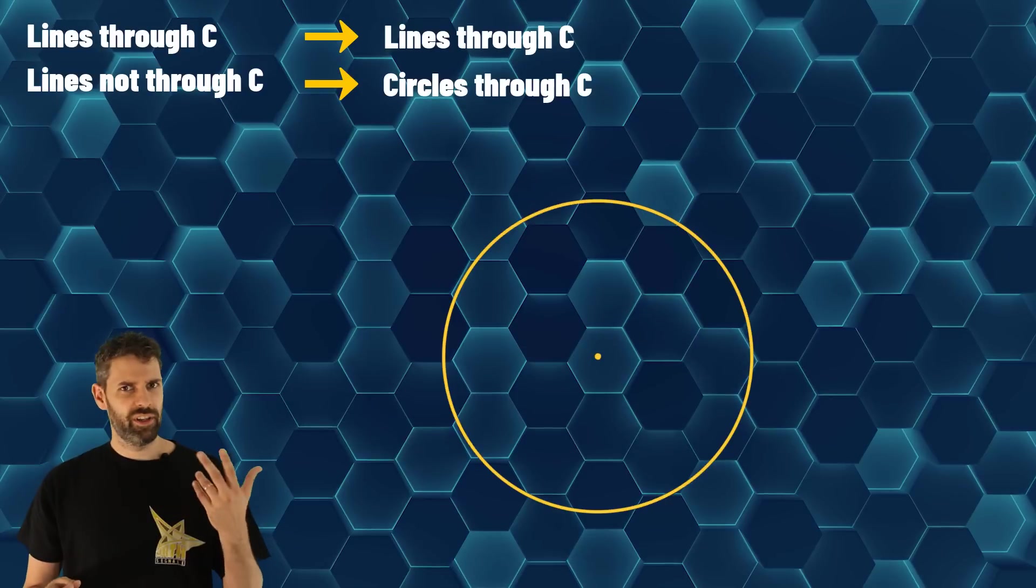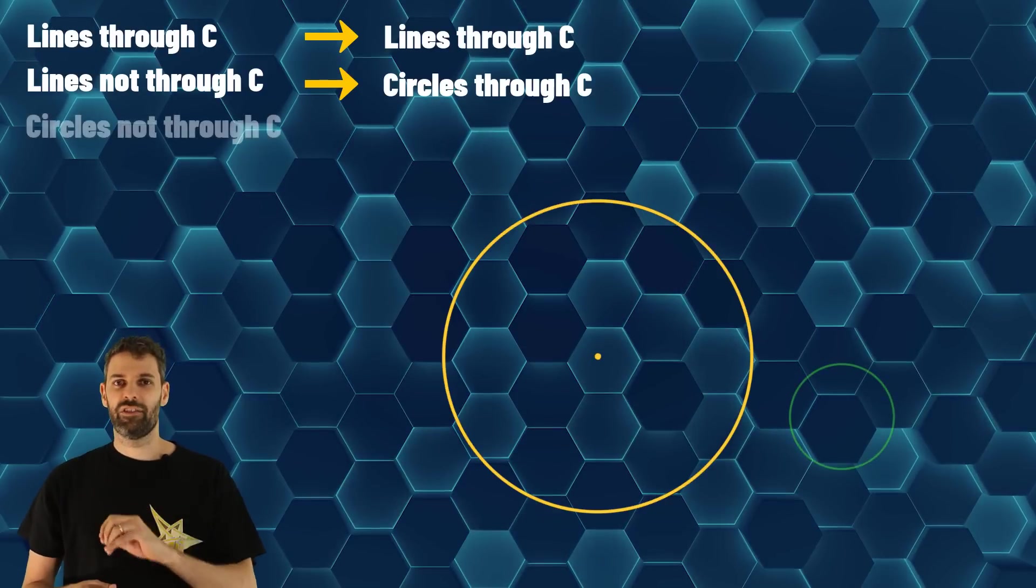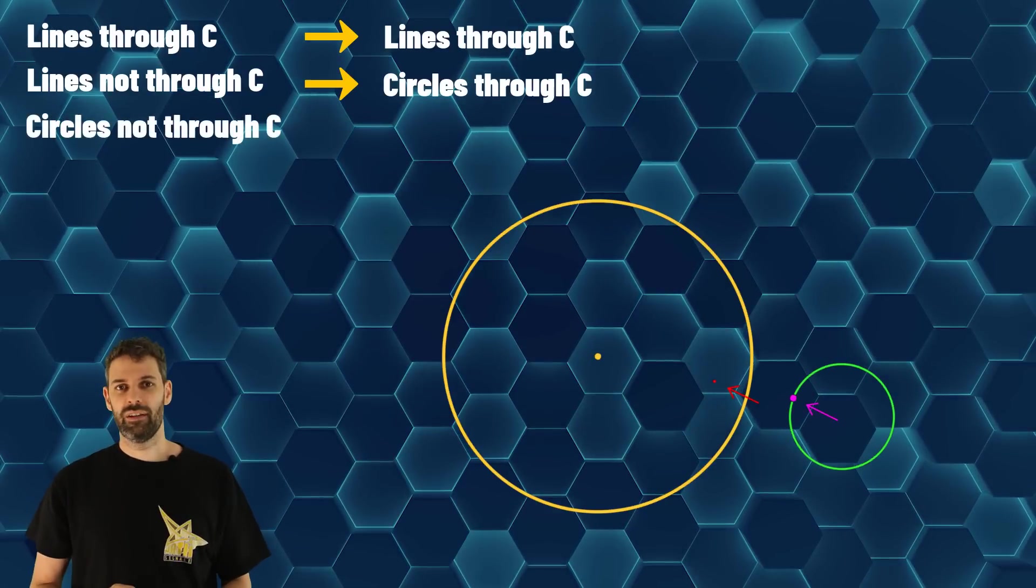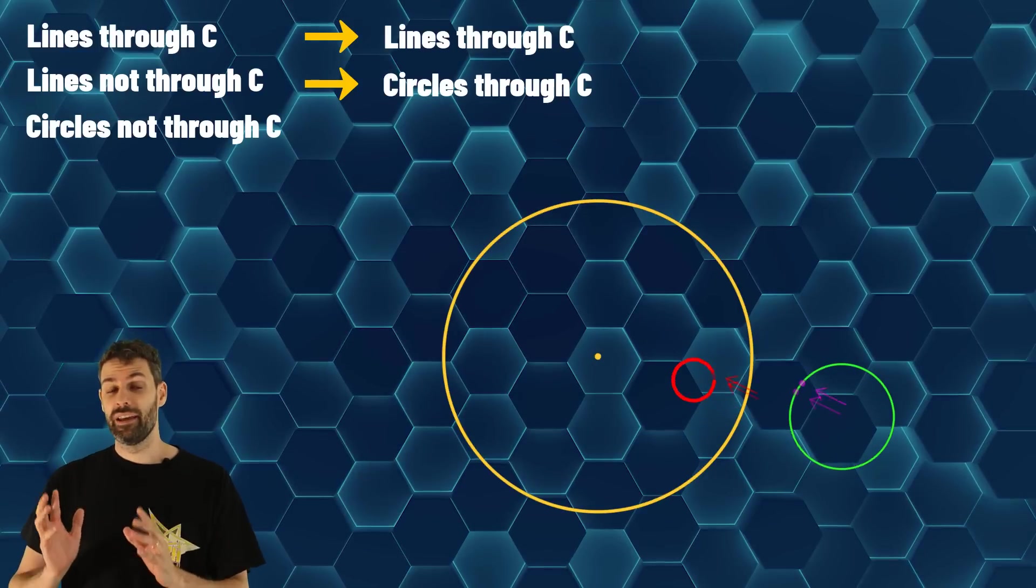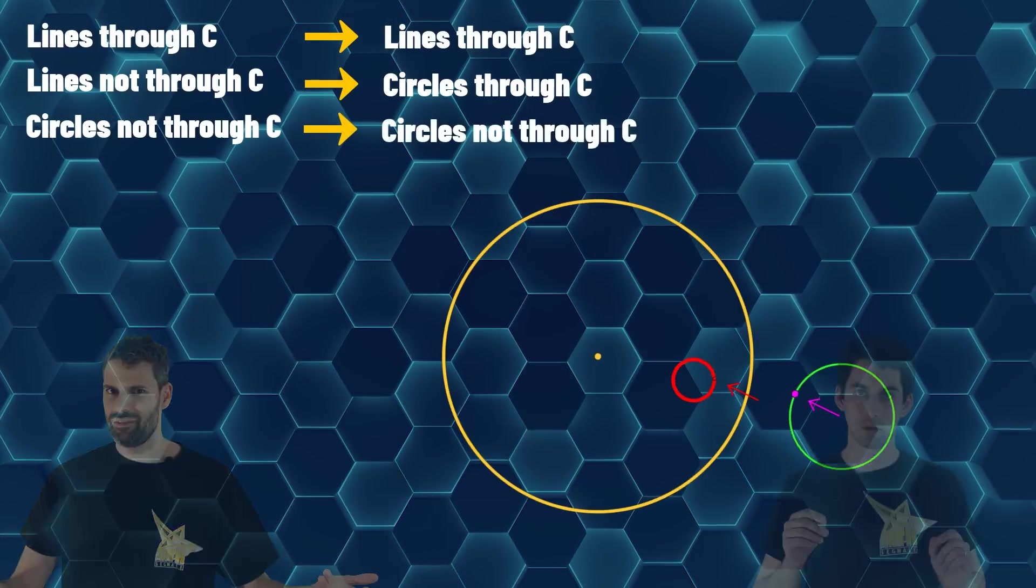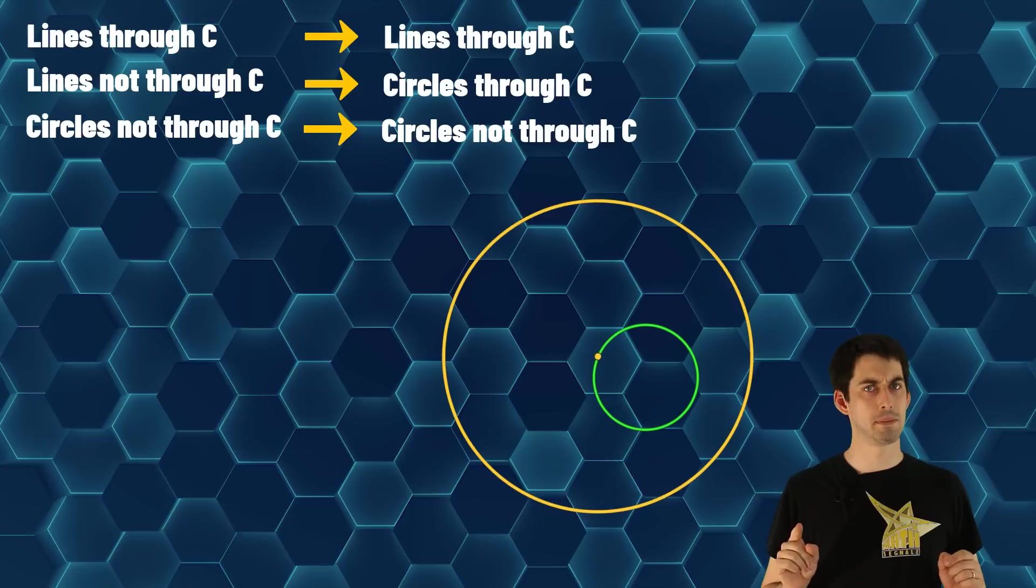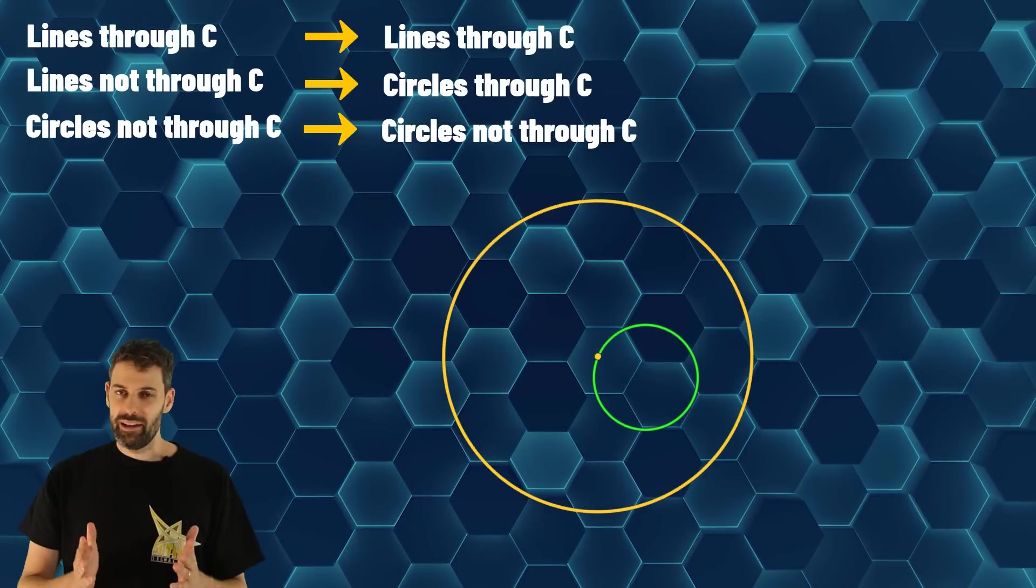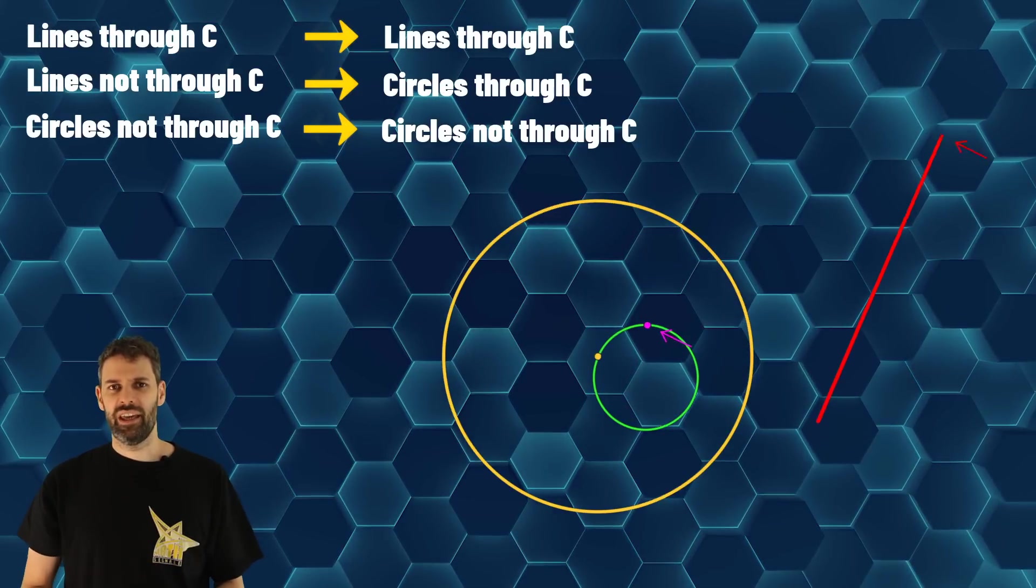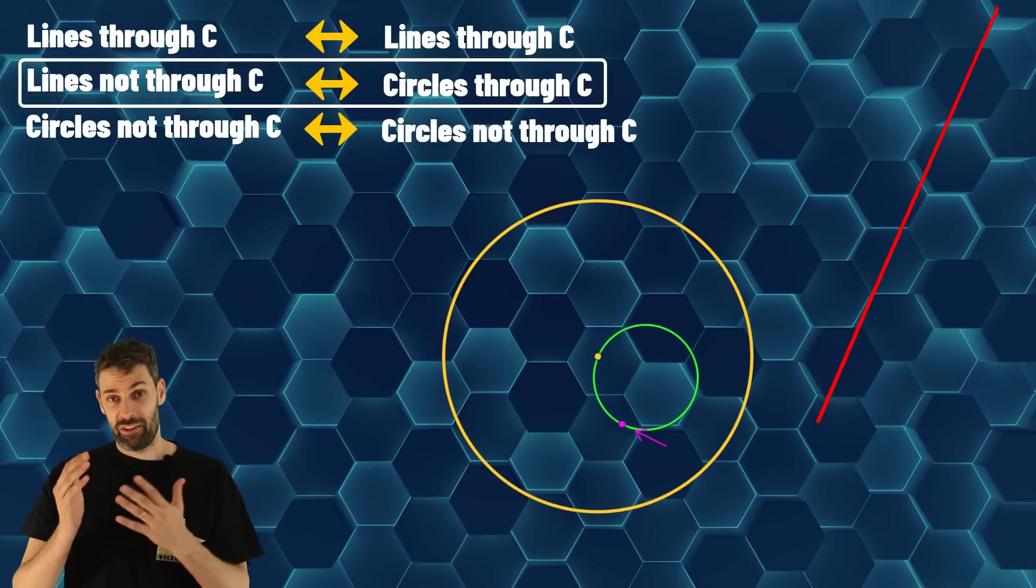You can ask, what about circles? Well, if you take a circle not passing through C, it will be transformed in a circle not passing through C. And what about circle passing through C? Well, in this case, which is the last case, you get the line not passing through C.